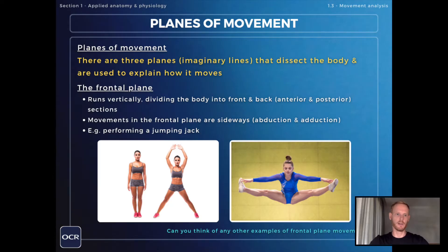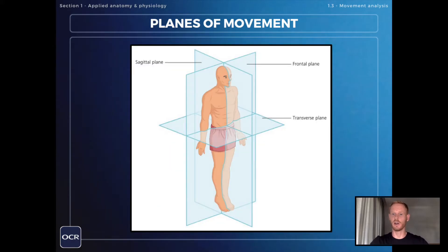The frontal plane runs vertically, dividing the body into front and back, otherwise known as anterior and posterior sections. As you can see in this diagram, the frontal plane clearly divides the body into front and back sections.